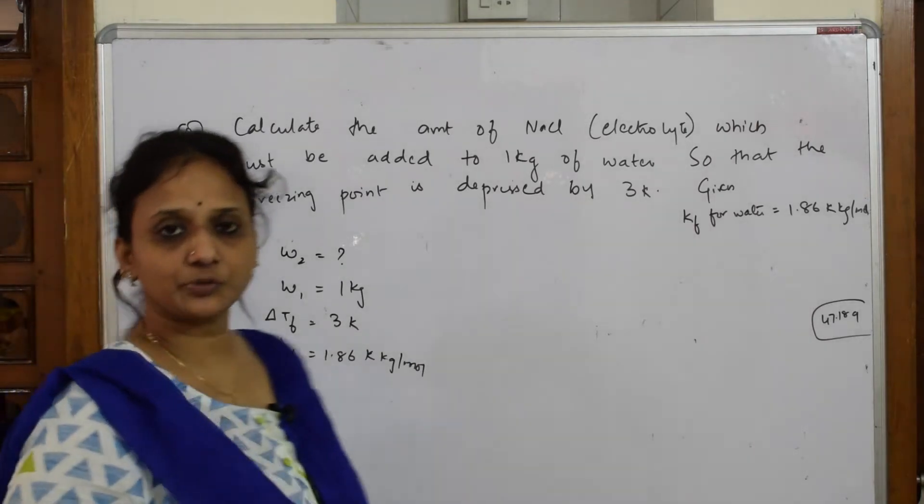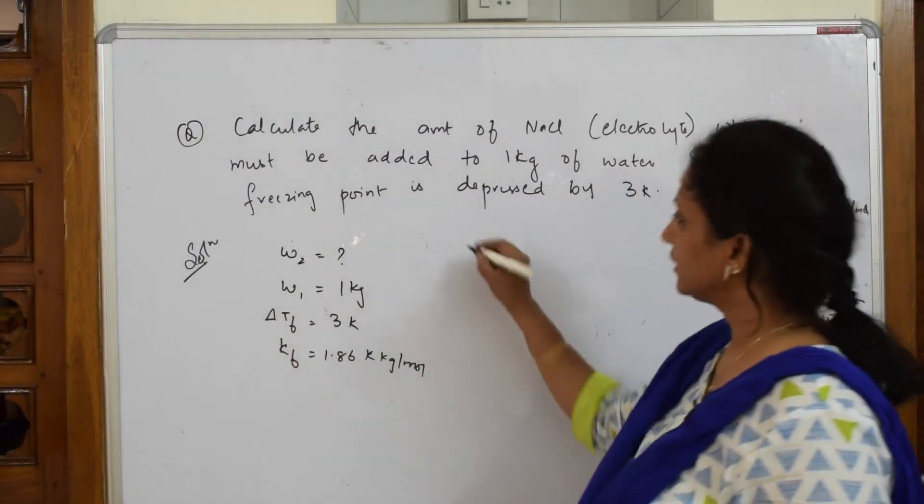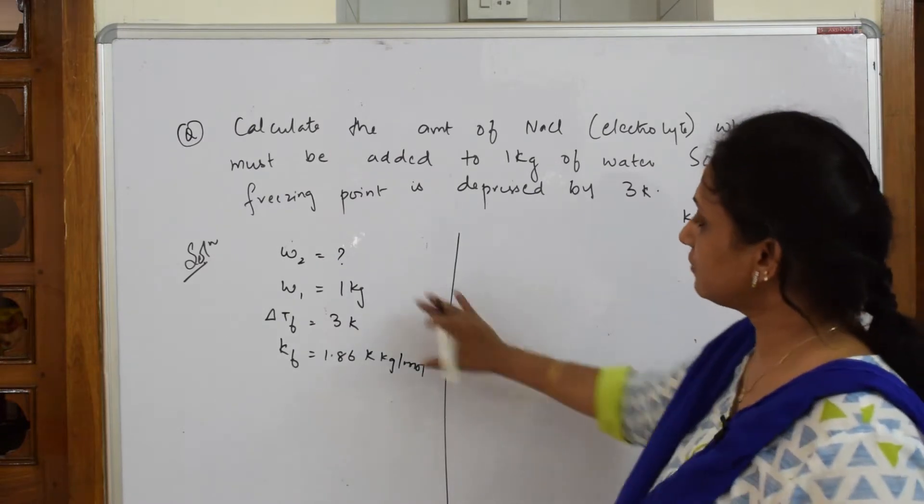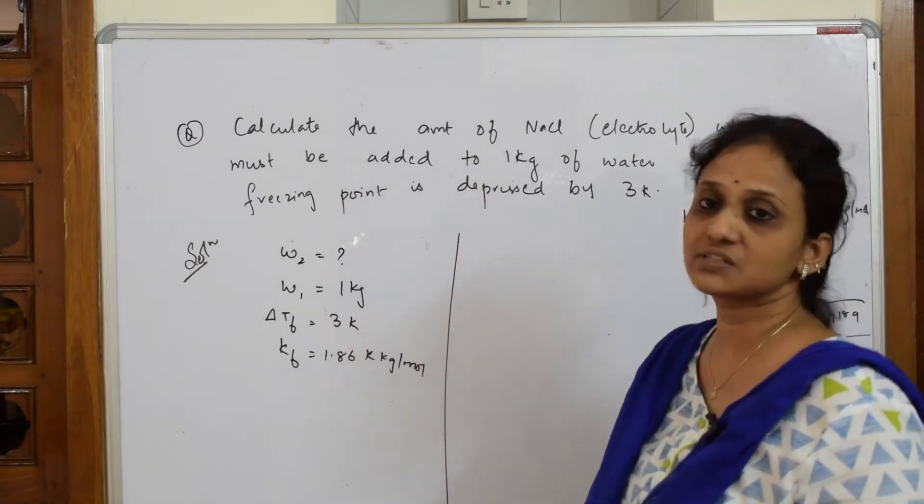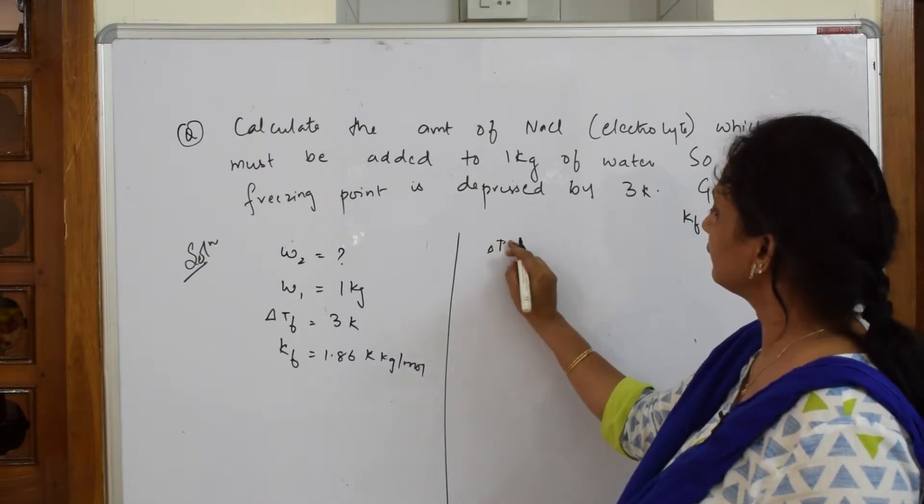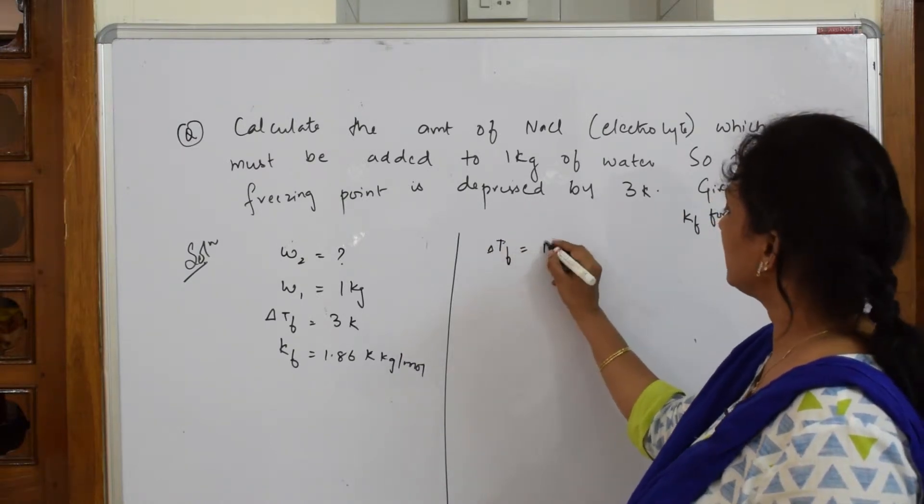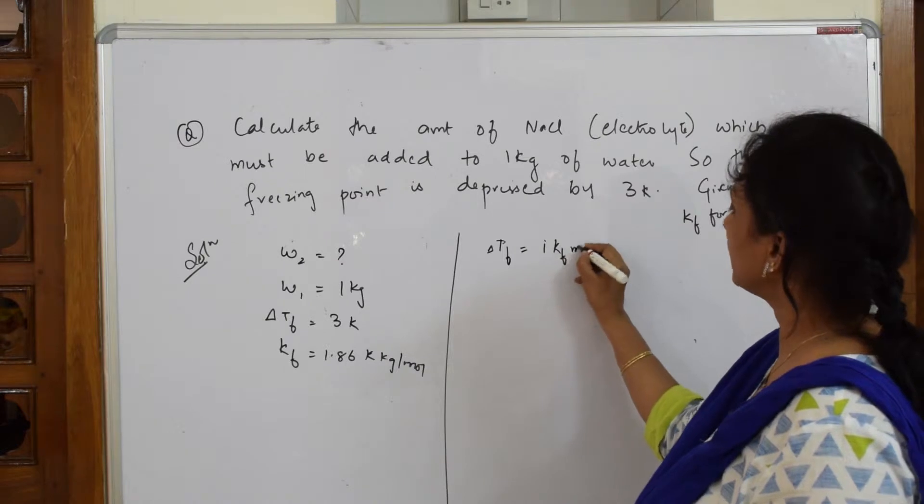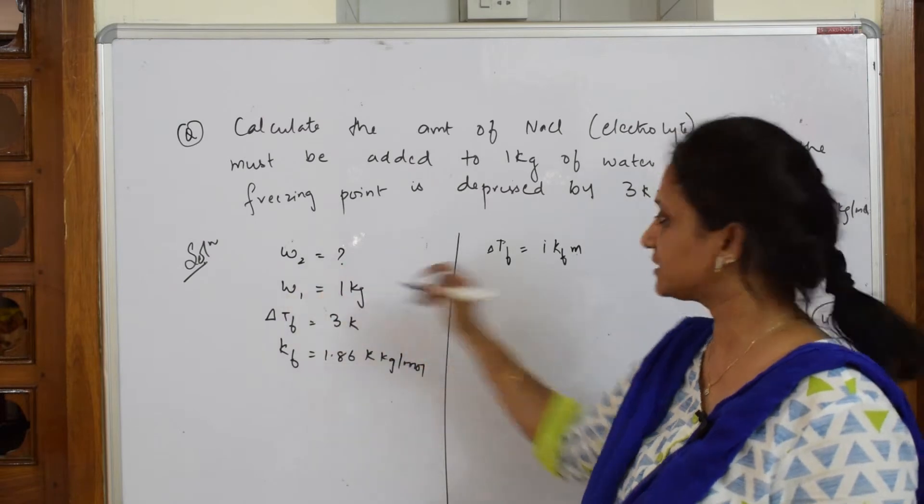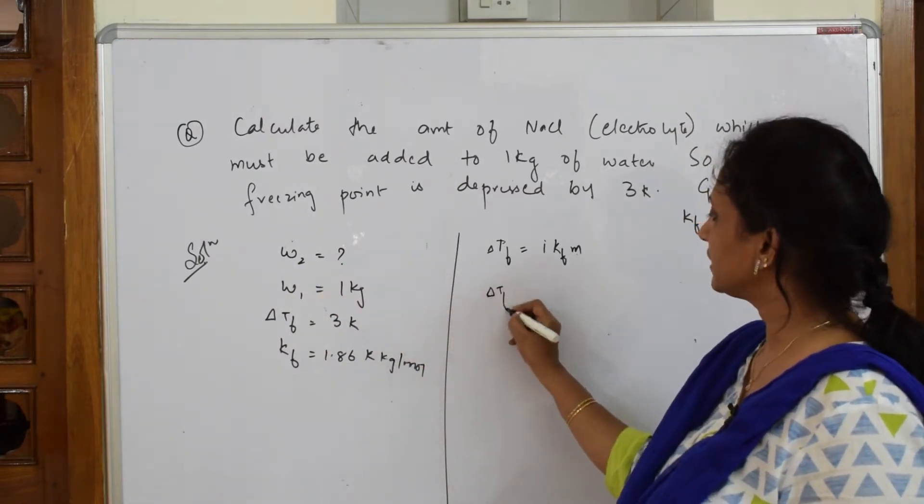Now I have to start solving the numerical. So we very well know how the van't Hoff factor is related. The formula is ΔTf is equal to i into Kf into m, molality. Now further in your molality you can find weight. Further expand this formula.